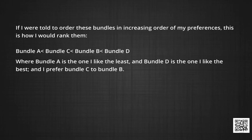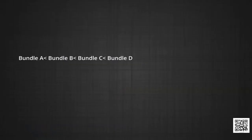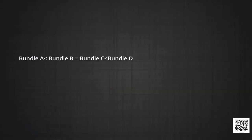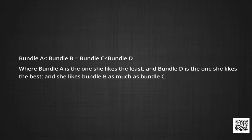In other words, I like bundle A the least and bundle D the best, and I prefer bundle C to bundle B. On the other hand, you may draw up the following ranking in increasing order of preference: bundle A is the worst, bundle B is better, followed by bundle C and then bundle D — so you also like bundle A the least and bundle D the best, but you prefer bundle C to bundle B. Similarly, your friend may draw up an alternative ranking in which she likes bundle A the least, bundle B as much as bundle C, and bundle B and C both less than bundle D.